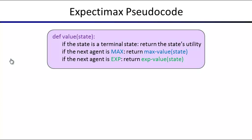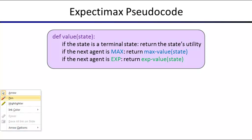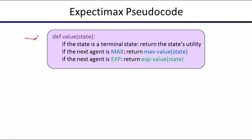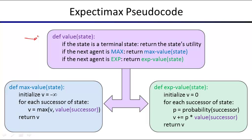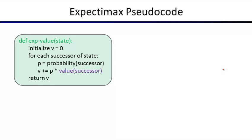We have the same kind of dispatch function to compute the value of a state. The dispatch now chooses between a maximizer node, an expected node, or a terminal node where you just read off the utility. In the expected node, you initialize value to zero, then loop: for every successor you add its value weighted by the probability of that successor occurring in actual execution. You return that weighted sum.